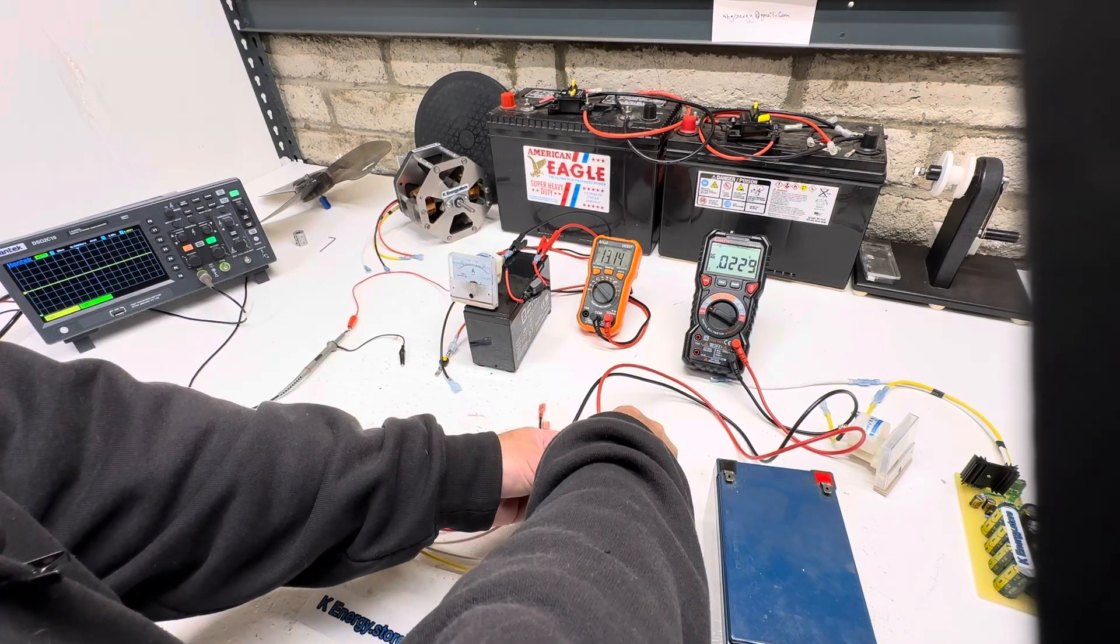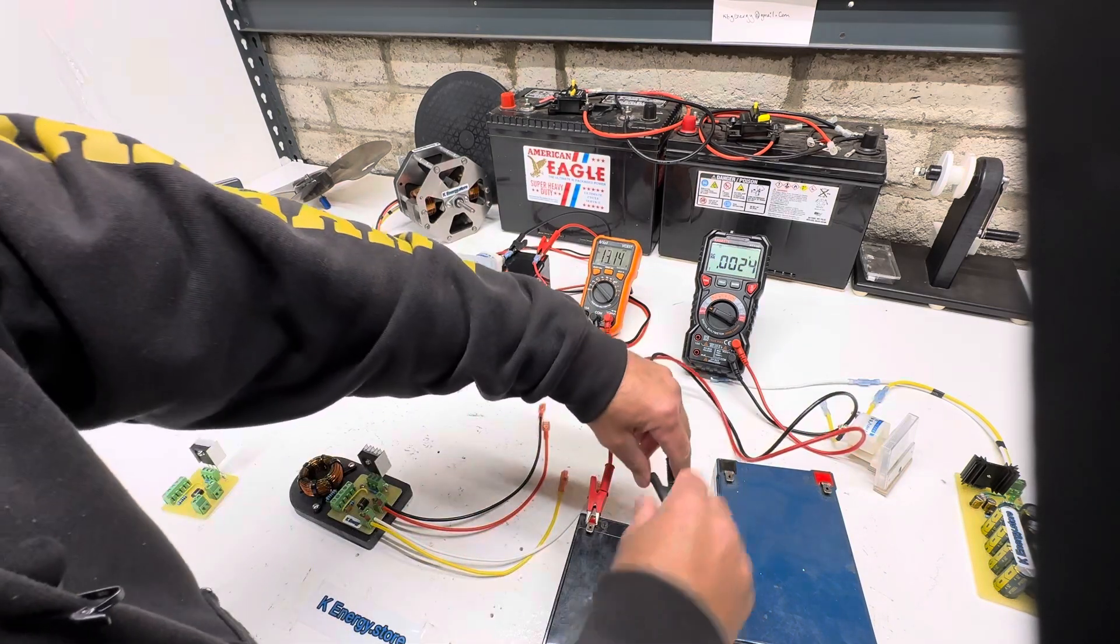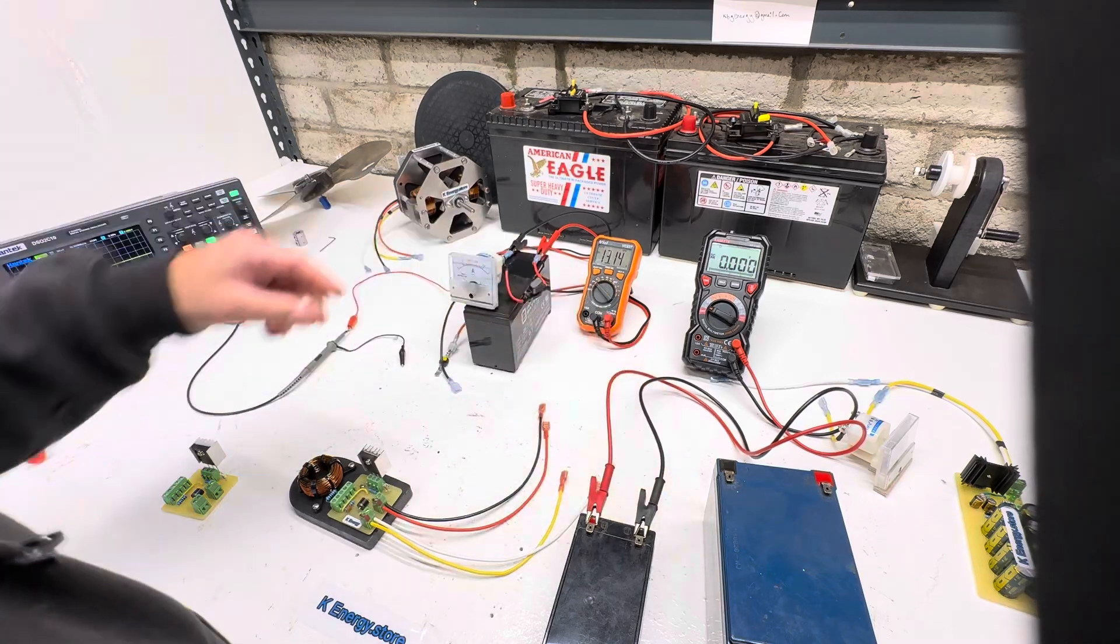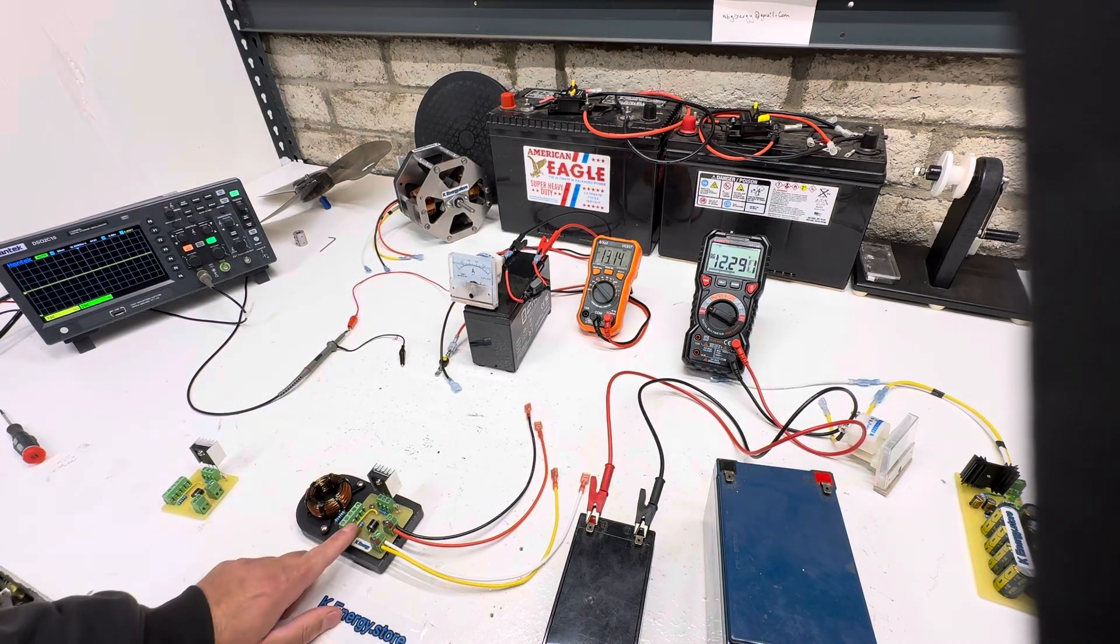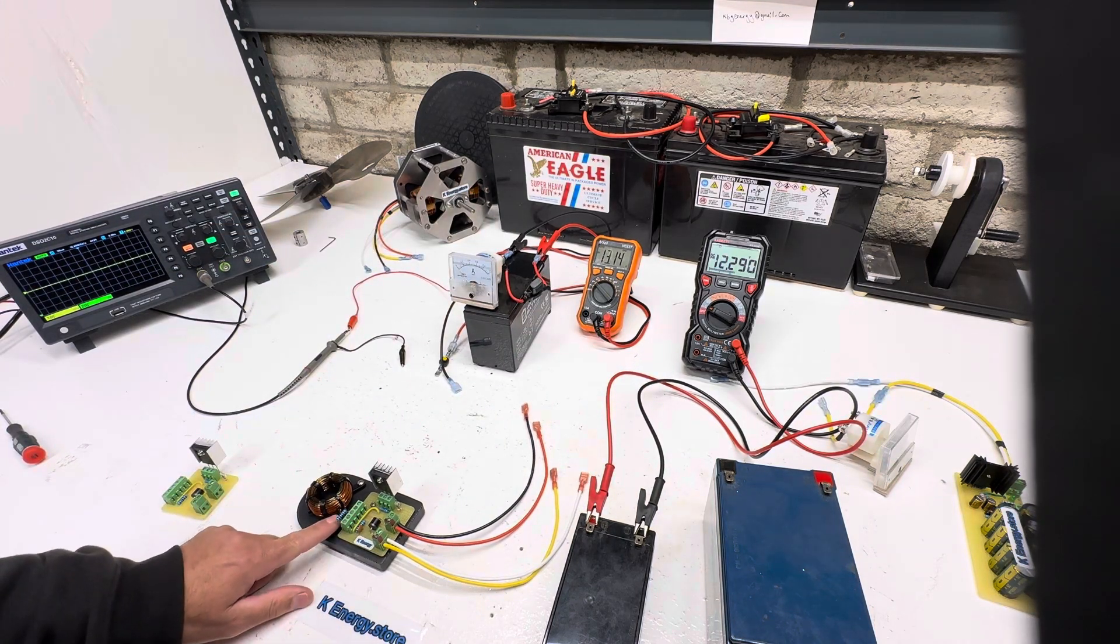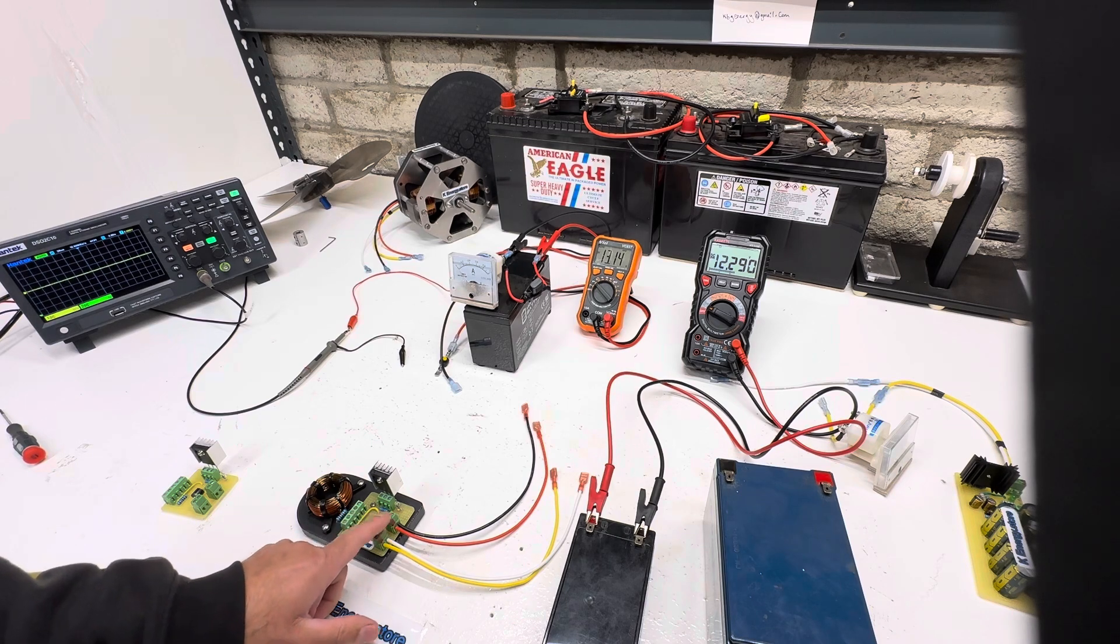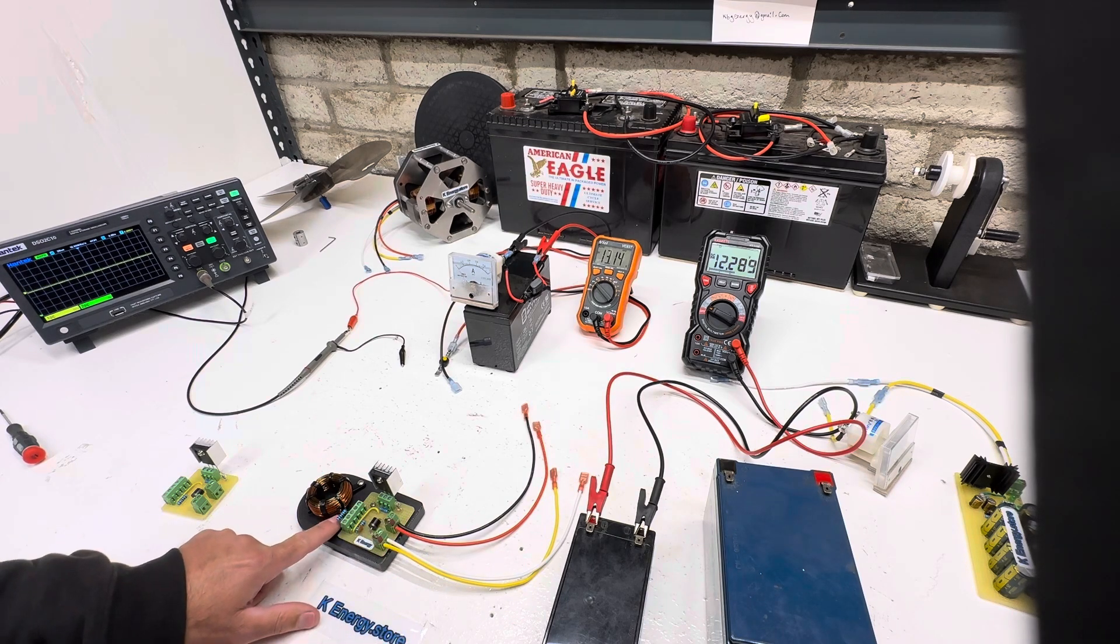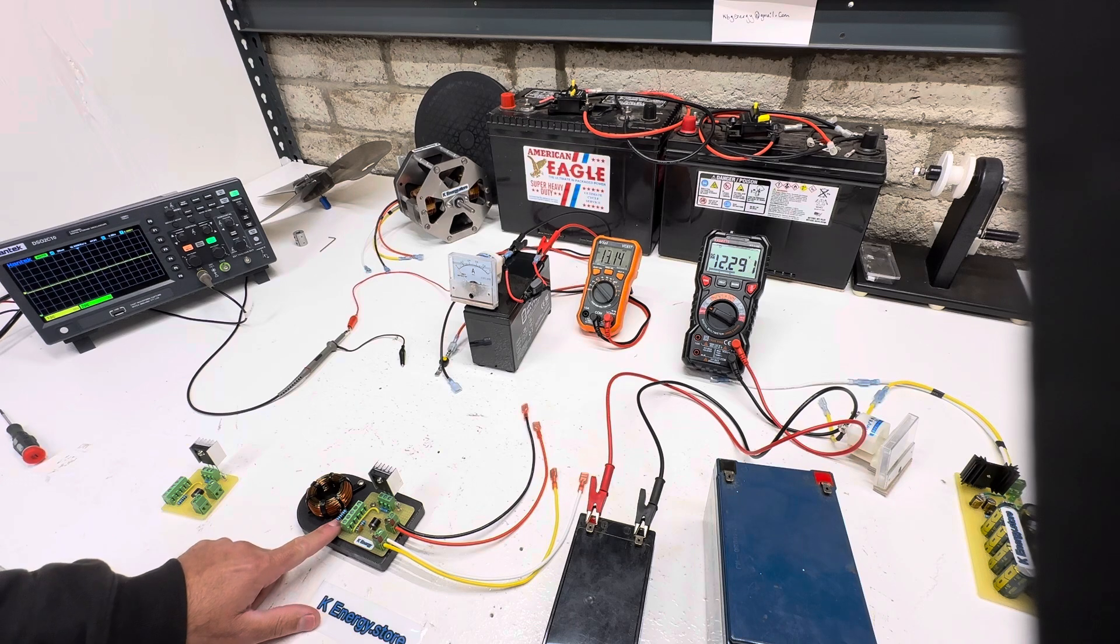For those of you that aren't familiar with the force oscillator, it's actually exactly the same as the Bedini circuit, except the negative wire that usually goes to ground on the trigger wire, the smaller of the two, that negative wire gets connected to the positive side of the coil.